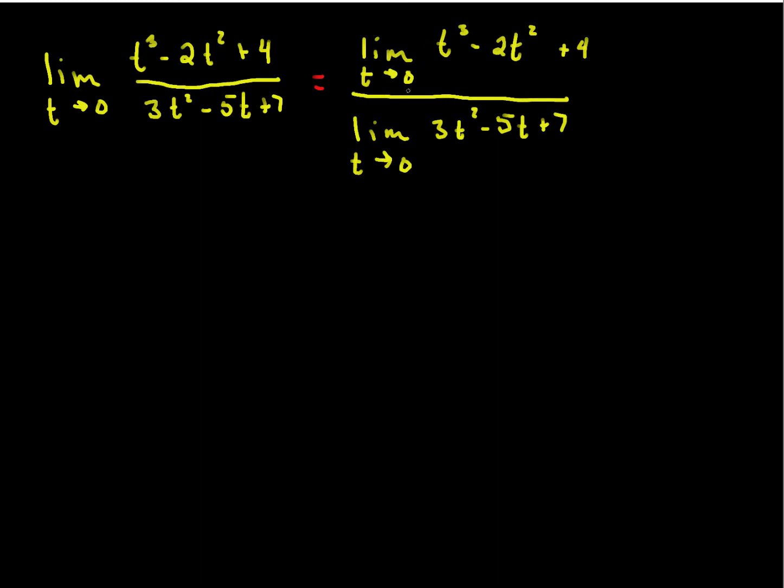Well, as t gets infinitely close to 0, this function right here, t cubed, is going to get close, in the limit go to 0. As t gets infinitely close to 0, this is going to get close to 0. And then 4, well, there's no t in it, so it would just keep at 4.